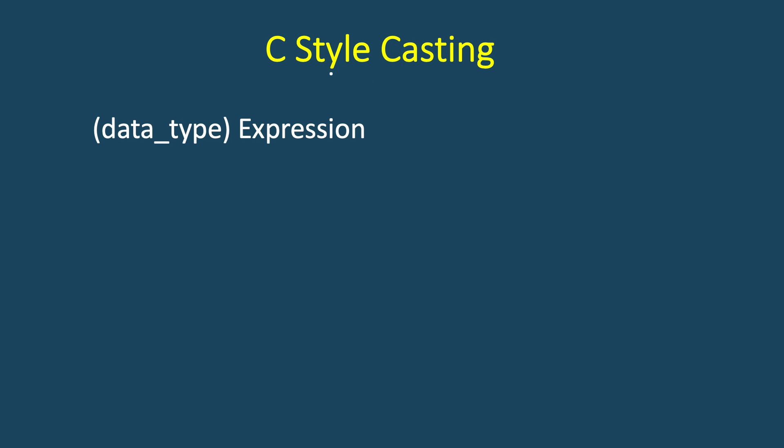So now let's study about C-style casting. Its syntax is that we specify the data type and then the expression or the variable. So it would be, if we want to convert a float to int, then we will write int and then the float value, let's say 2.5, then it will be converted to 2.